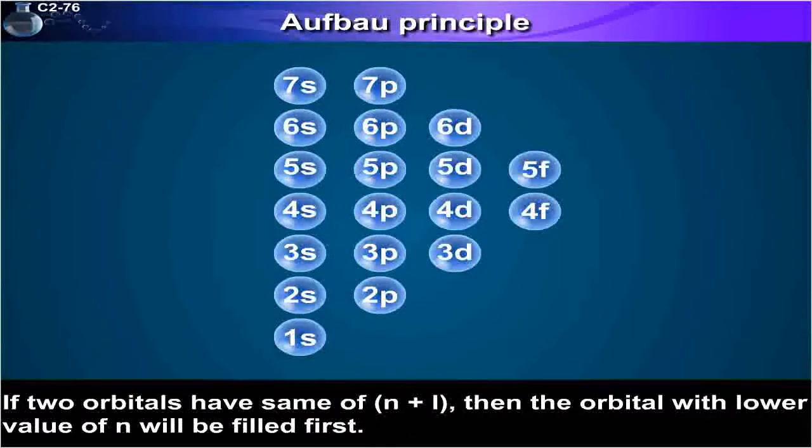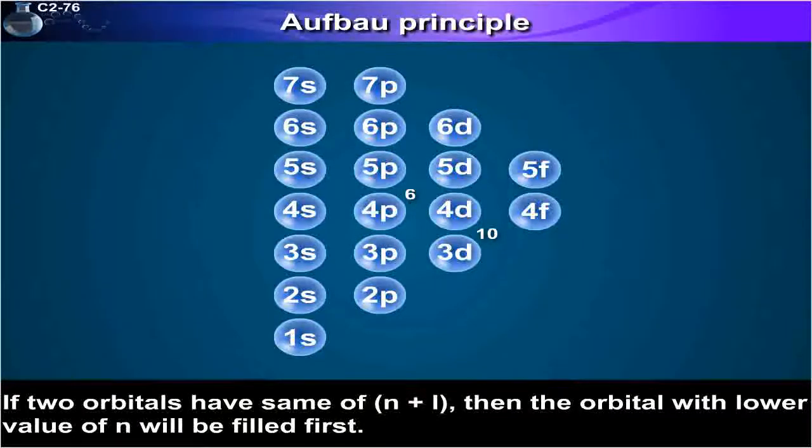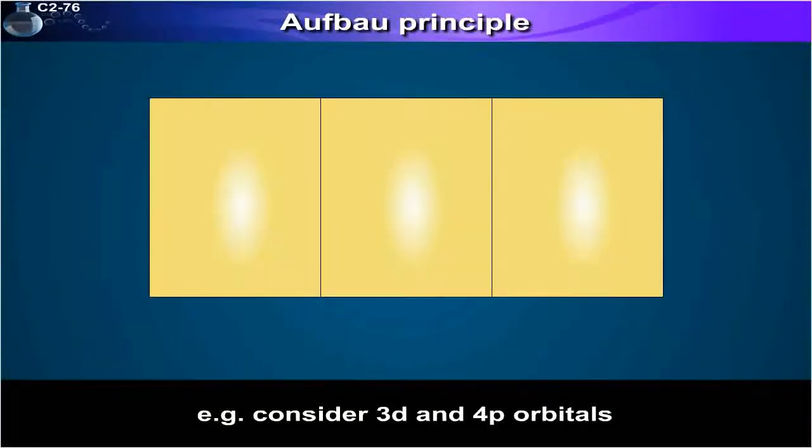Rule 2: If two orbitals have same value of n plus l, then the orbital with lower value of n will be filled first. For example consider 3d and 4p orbitals.